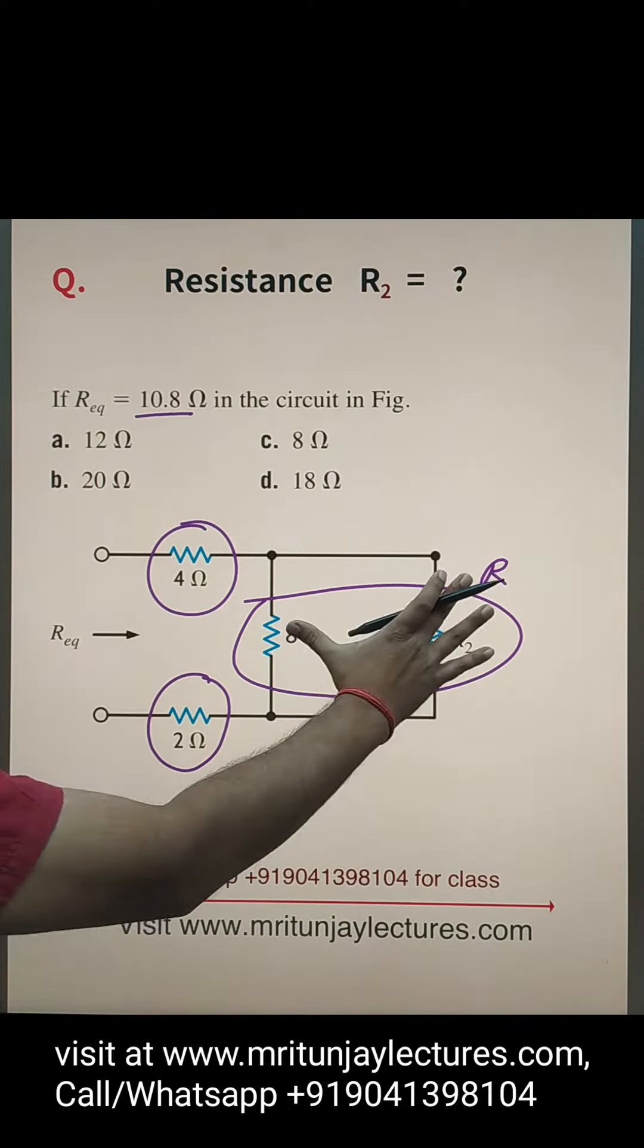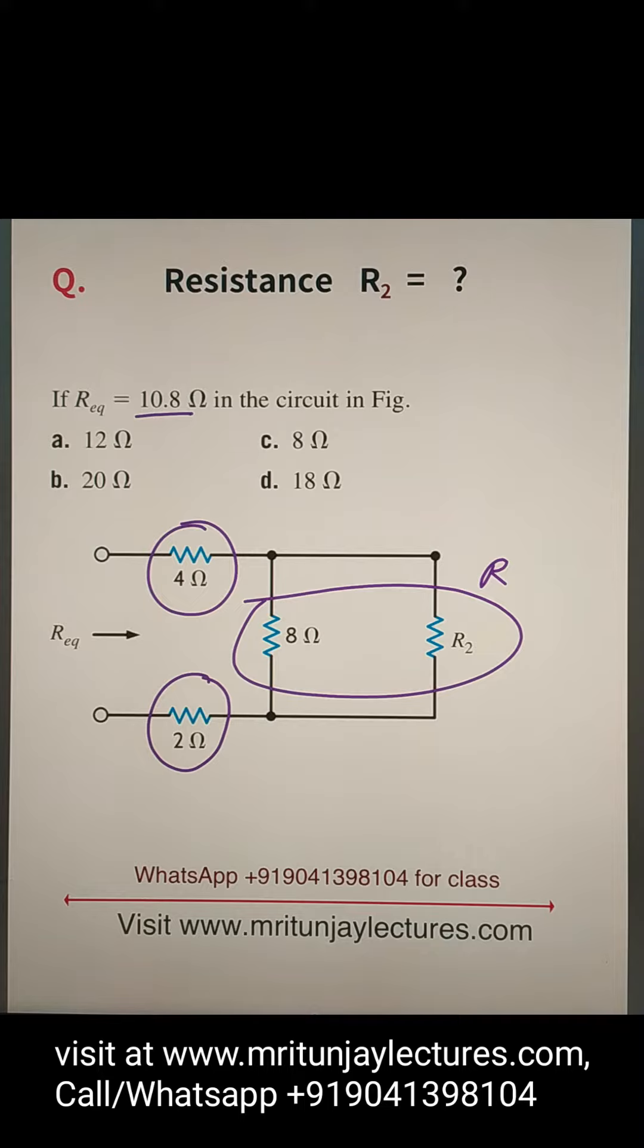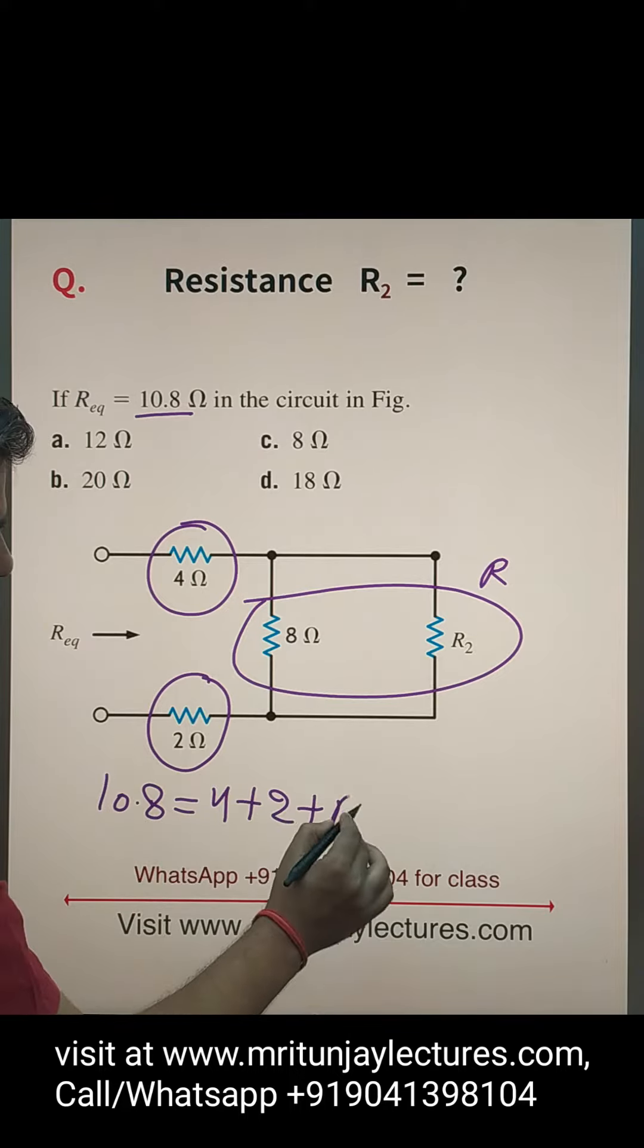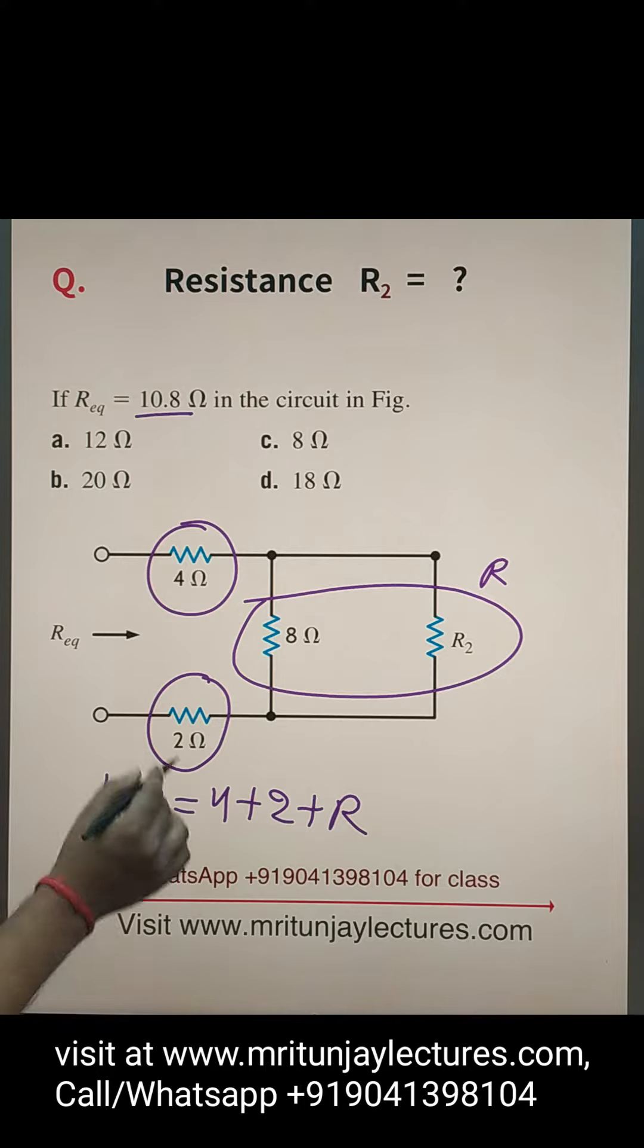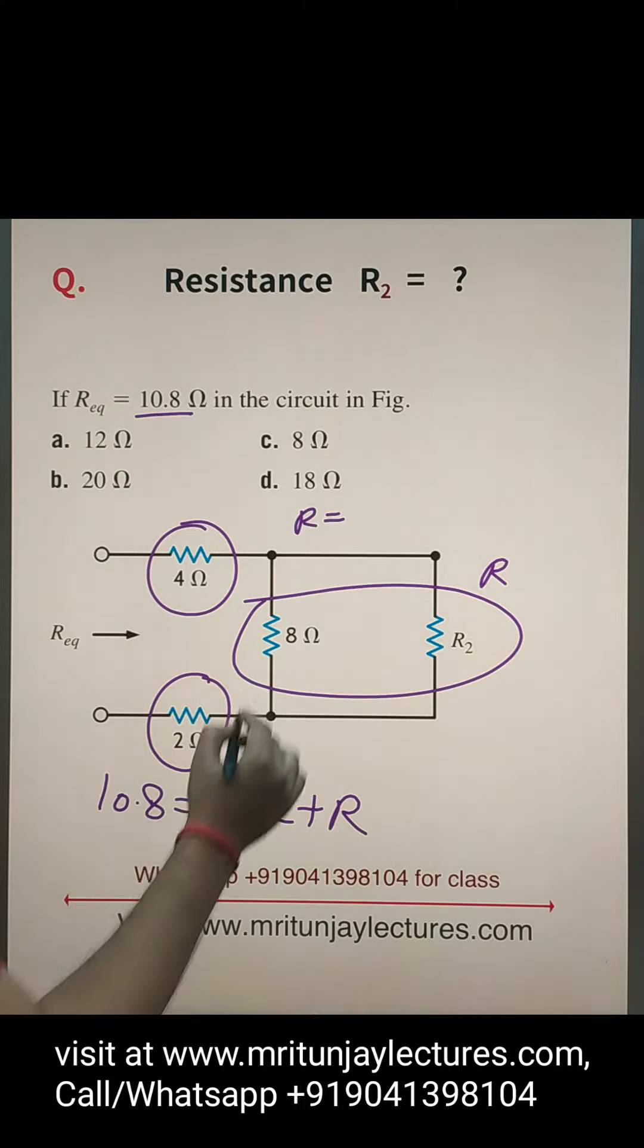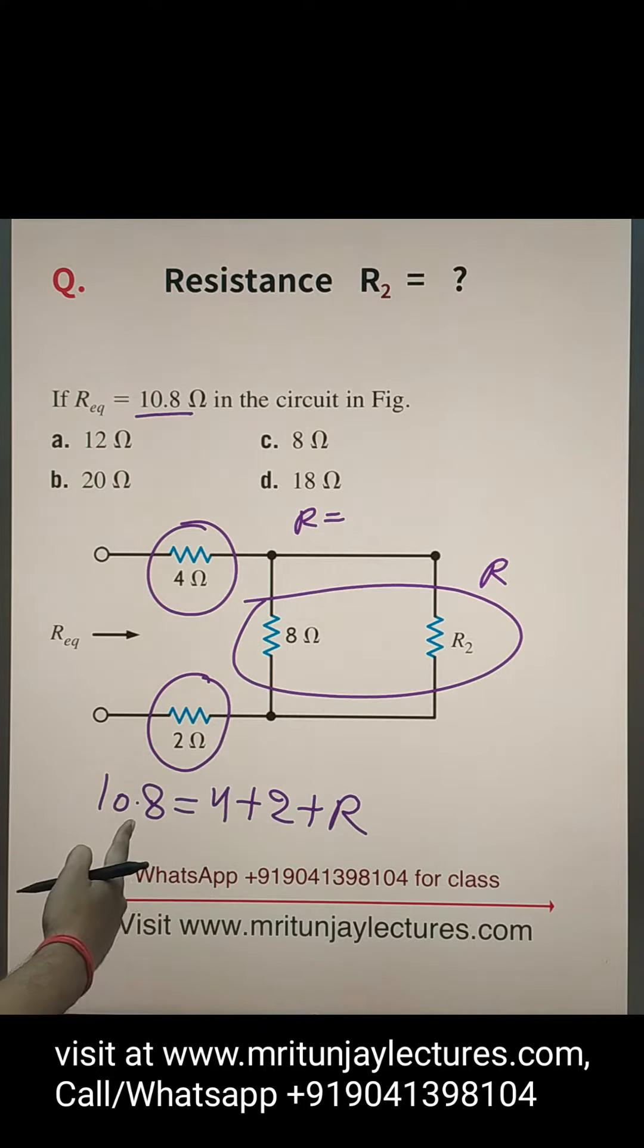This one, that R and 2 are in series and equivalent is 10.8. So 10.8 equals 4 plus 2 and equivalent of that one is R. So what about R? R is basically 10.8 minus 6, that is how much?